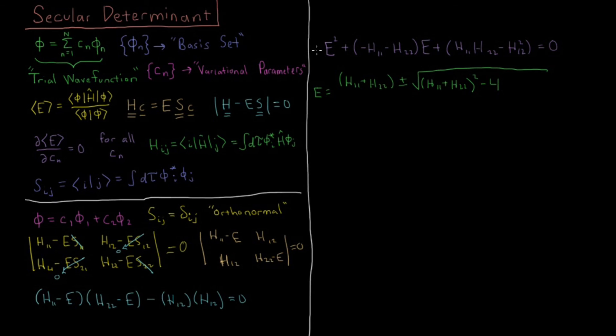Minus 4, a is 1, so we don't have to worry about it. Then c is this, H11*H22 minus H12². All of this divided by 2a, a is 1, so it's just divided by 2.